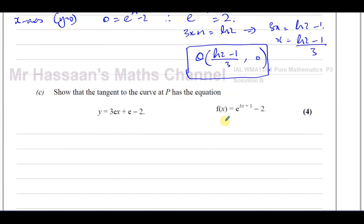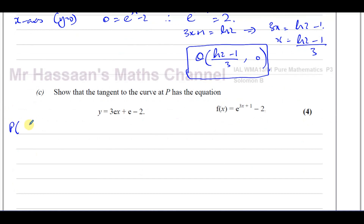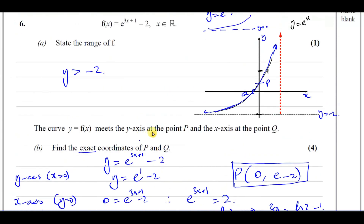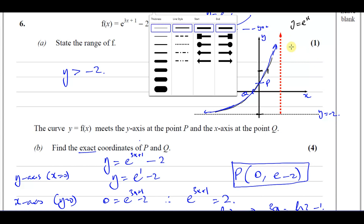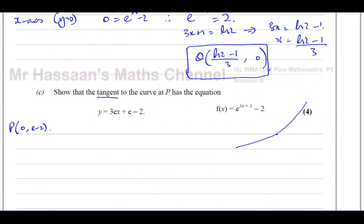For part C, it says show that the tangent to the curve at P has the equation y equals 3ex plus e minus 2. Point P has coordinates 0, e minus 2. To find the equation of a tangent — a tangent is a straight line that touches the curve at P. To find the equation of a straight line, we need two things: the gradient of the line and a point on the line. We have the point P which is 0, e minus 2.